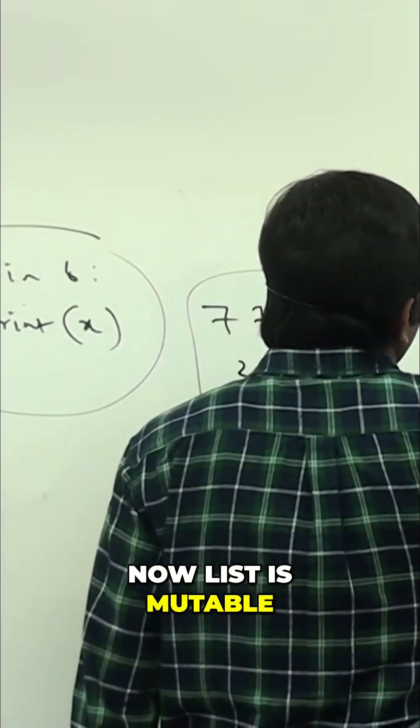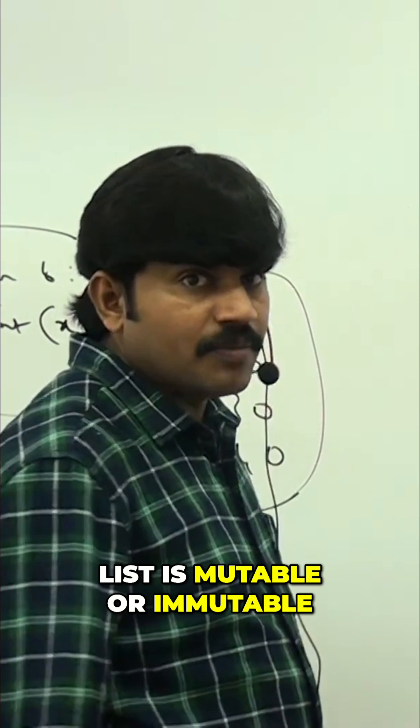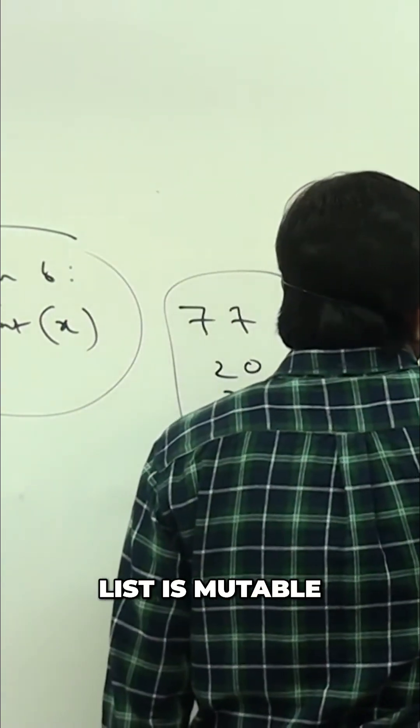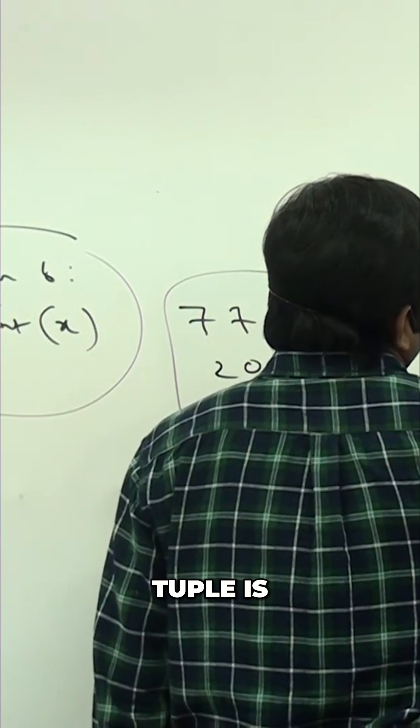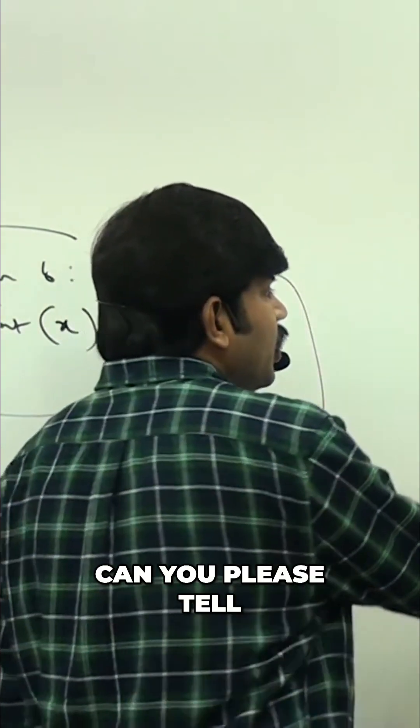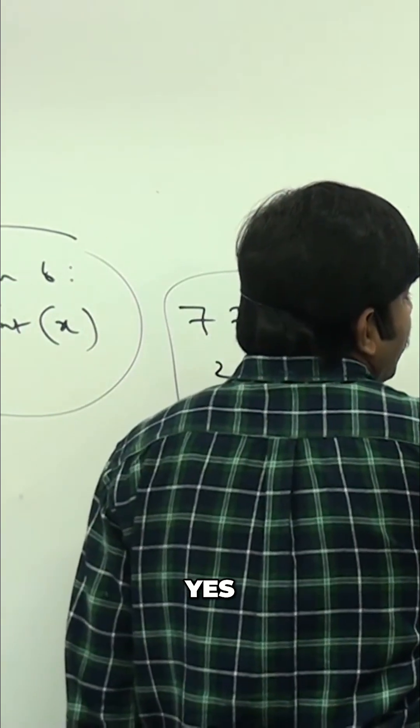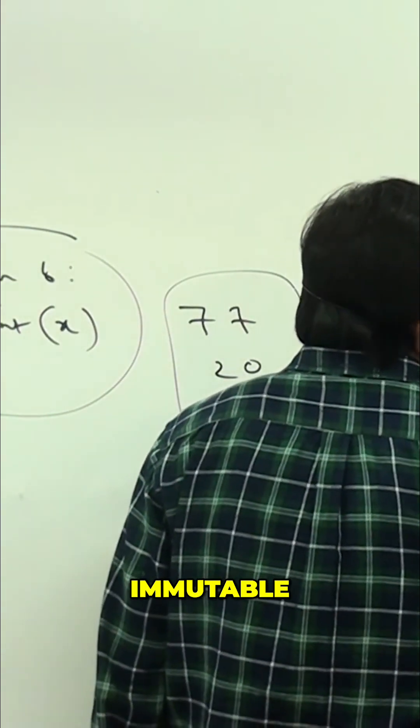List is mutable or immutable? List is mutable, changeable. Tuple is immutable. Next, set - can you please tell, mutable or not? Yes, mutable. Frozen set is immutable.